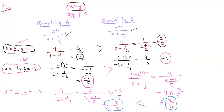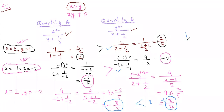For the first two cases quantity A was greater, but for this last case quantity B is greater. Since quantity A is greater sometimes and quantity B is greater other times, we cannot define the relationship from the information given. The answer must be T.